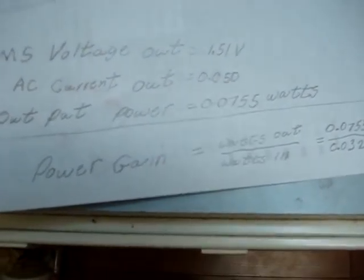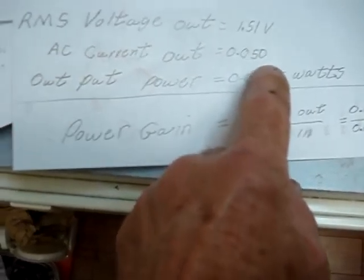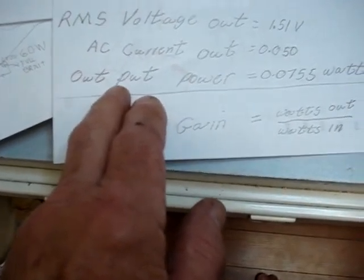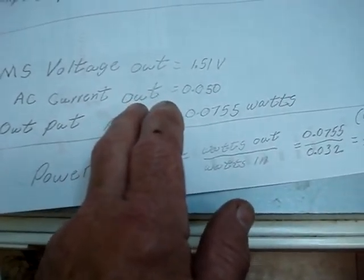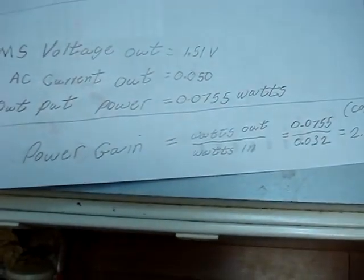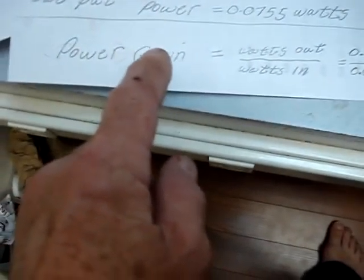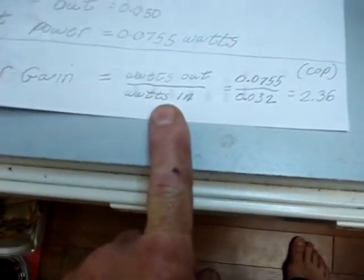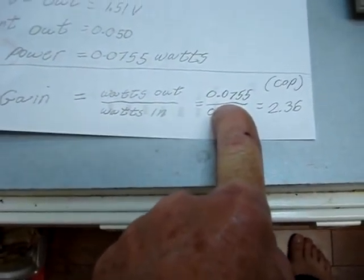My RMS voltage out is 1.51, my AC current out is 50 milliamps. My output power is my RMS voltage out times my AC current out, about 0.0755 watts. So if I calculate my power gain using those two wattage numbers, wattage out divided by wattage in comes out to be 0.0755 watts divided by 0.032 watts.